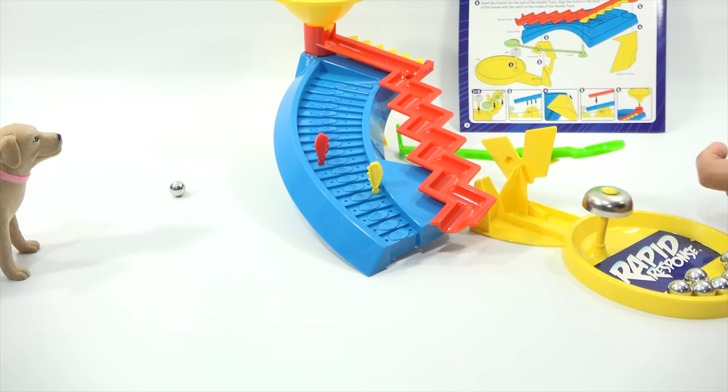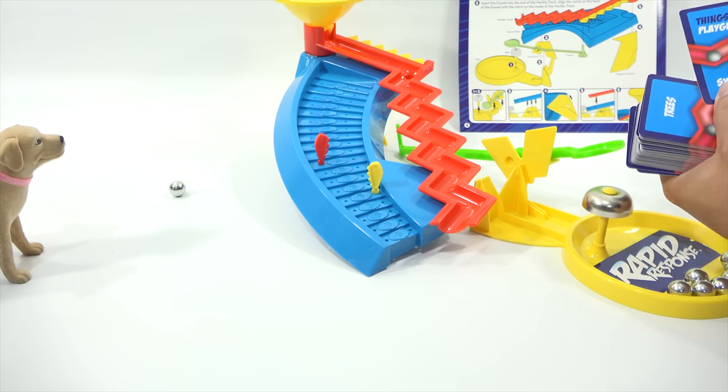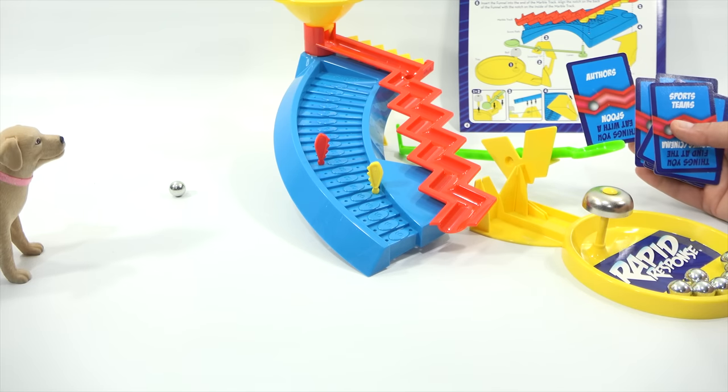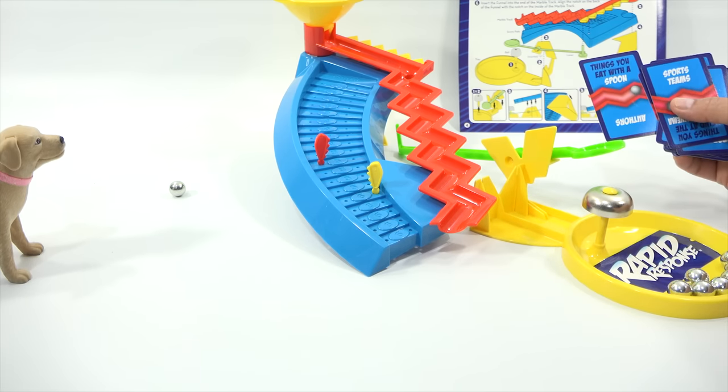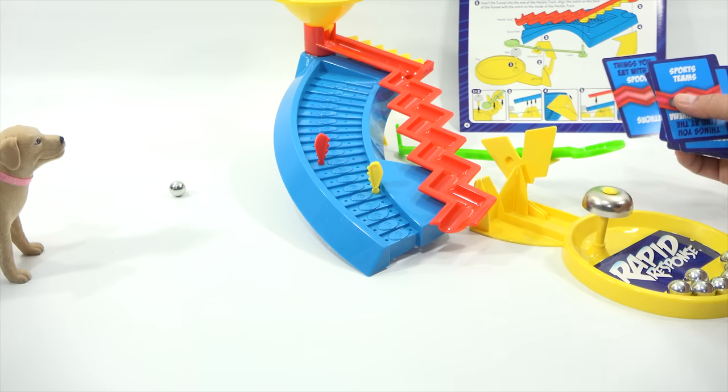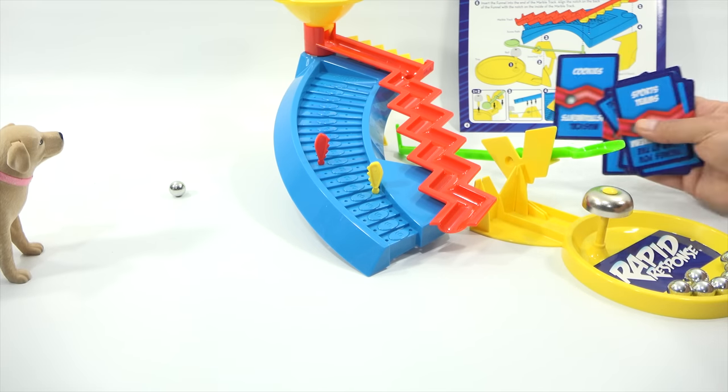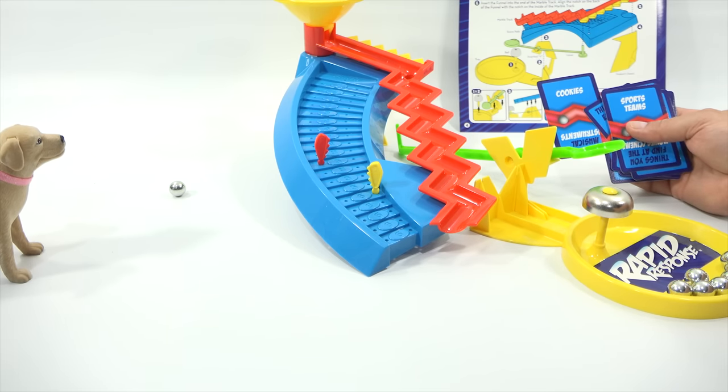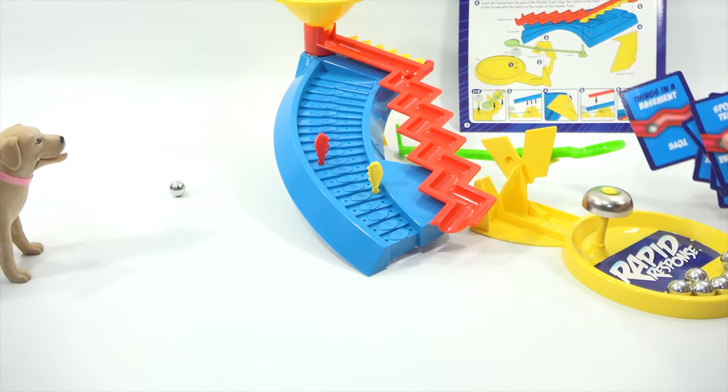But let's look at some of the cards while we're here. Rapid response. Wow. Oh, this is going to be fun. Things on a playground. Monsters. Frankenstein. Count Dracula. The thing. Authors. Okay. That's a hard one. Things you eat with a spoon. Everything. Yogurt. Cereal. Macaroni and cheese. Whoppers. Cities. Cookies. Chocolate chip. Cowboy cookie. Snickerdoodle. White chocolate macadamia. Double chocolate walnut. Pecan caramel. I'm hungry. You're going to be good at this.